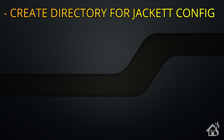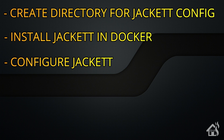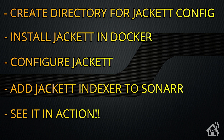Let's do a quick run through everything we're going to cover in this video. First we're going to create a directory in our home folder for our Jacket config. Once we do that we'll install Jacket in a Docker container. Then we need to configure Jacket — basically just add our indexers for all of our download sites. Once that's done, we'll add the Jacket indexer into Sonar, and lastly I'll show you what that looks like in action.